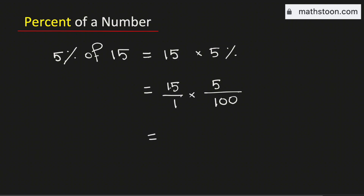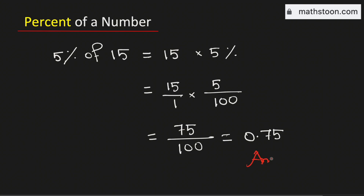In the numerator we have 15 times 5, which is 75, and in the denominator we have 1 times 100, which is 100. This is the same as 0.75. Therefore, 5% of 15 is equal to 0.75, and this is our final answer.